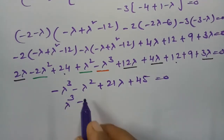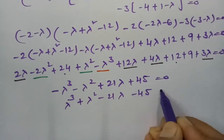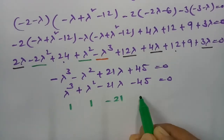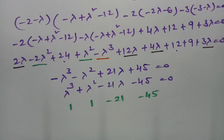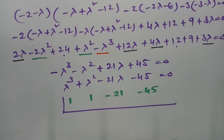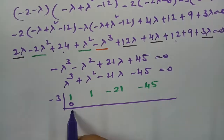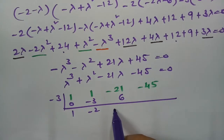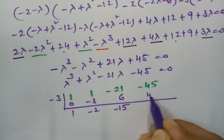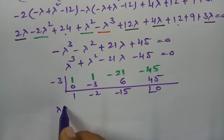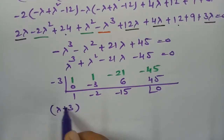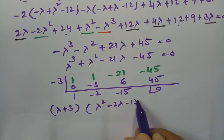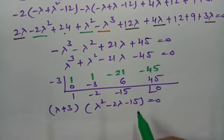Multiplying through by −1: λ³ + λ² − 21λ − 45 = 0. The coefficients are 1, 1, −21, −45. Testing λ = −3 using synthetic division: −3 | 1, 1, −21, −45 gives remainder 0, confirming (λ + 3) is a factor. The quotient is λ² − 2λ − 15.